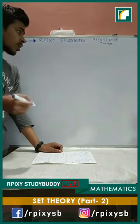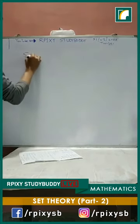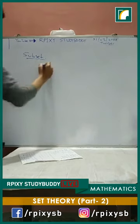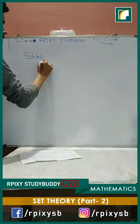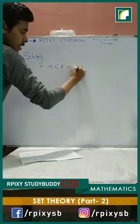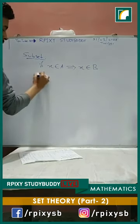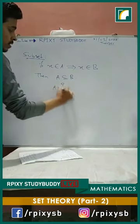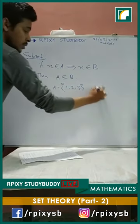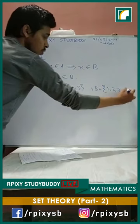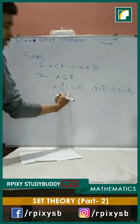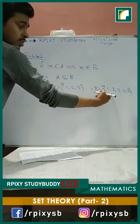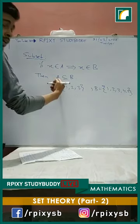We will start today from subset again. In our last class, we discussed the definition of subset: if X belongs to A implies X belongs to B, then A will be a subset of B. For example, suppose A is a set containing elements 1, 2, 3 and B is another set whose elements are 1, 2, 3, 4, and 5. Every element of A is an element of B, so if X belongs to A that implies X belongs to B — therefore A is a subset of B.